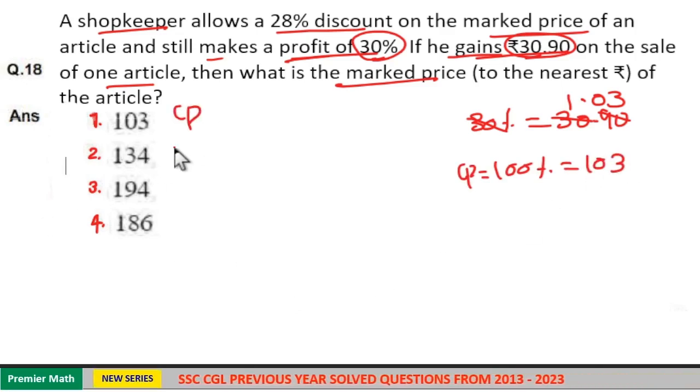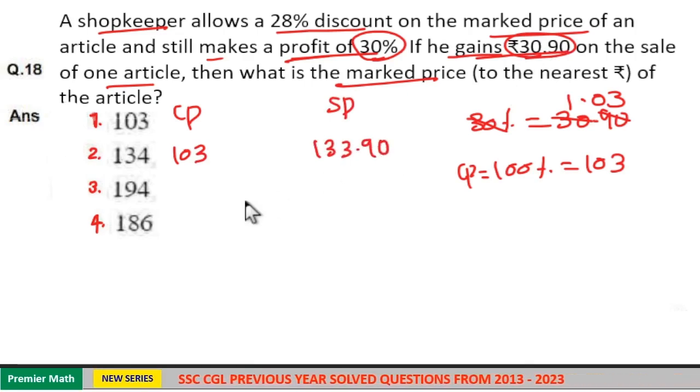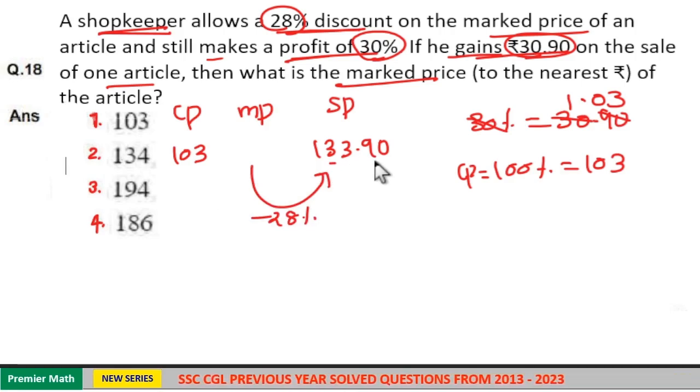Now if cost price is ₹103, then selling price = 103 + 30.9 = ₹133.90. Here, the shopkeeper allows 28% discount on the marked price. When he allows 28% discount on the marked price, this leads to the selling price of ₹133.90.